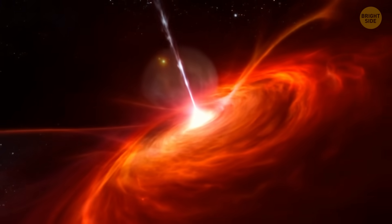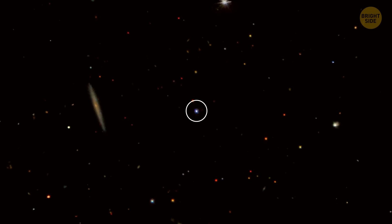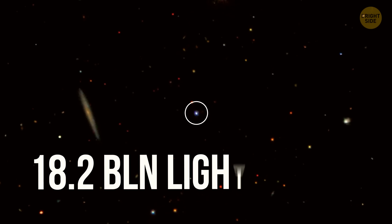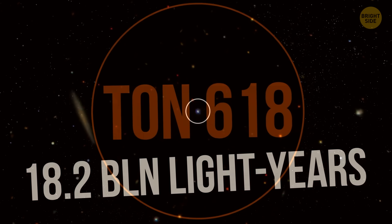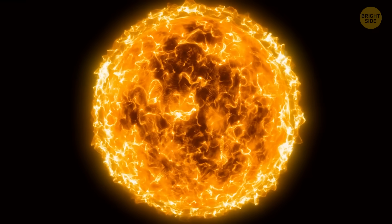TON-618 is very, very far away, about 18.2 billion light-years from Earth. And it's 40 billion times heavier than our sun.